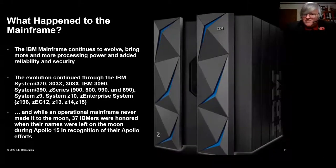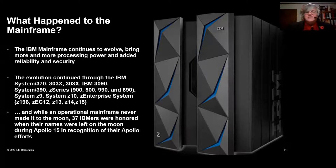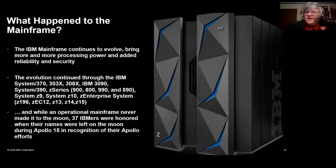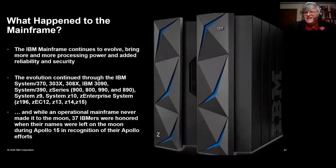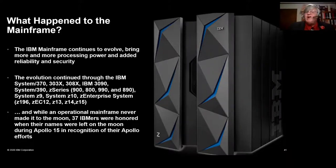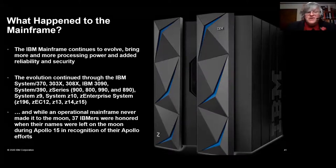So what happened to the mainframe? Everybody in this room knows — it continued to evolve. System 370, System 390, the evolution has gone on for 50 years through all the machines up through the Z15. And while an operational mainframe never made it to the lunar surface, 37 IBMers had their names inscribed on metal — NASA honored the key contributors to the lunar program, and those 37 names were left on the lunar surface during the Apollo 15 mission in recognition of all the work done by IBM contractors.